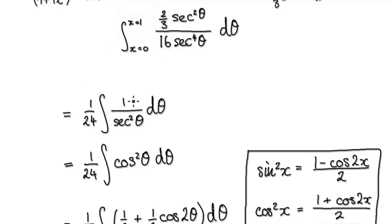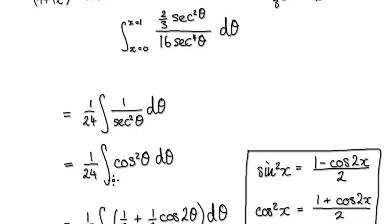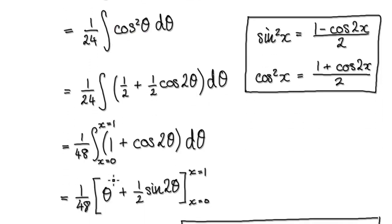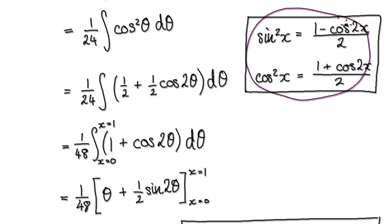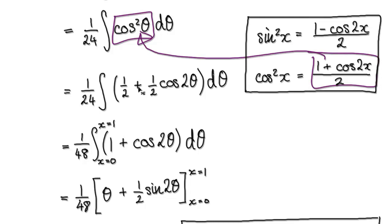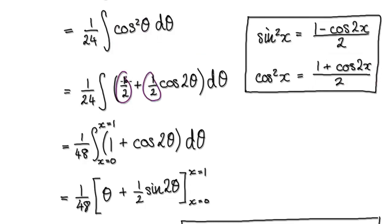Now it's just a matter of — whenever you see 1 over sec², that becomes cos²θ. Whenever you try and integrate cos²θ or sin²θ, you should always visualize this in your mind — ingrain this because it's so important. So we put cos²θ in here and factor out the half. That then gives us this.